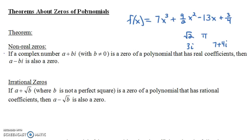There are really two parts to this theorem. Part 1 says: if a complex number a+bi, where b is not zero, is a zero of a polynomial that has real coefficients (so no i's in the coefficients), then a−bi is also a zero. So if a+bi is a zero, then a−bi will also be a zero, and vice versa. These zeros come in conjugate pairs.